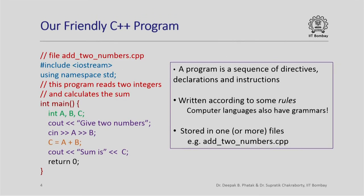Here is our friendly C++ program that we have seen earlier, which sums up two numbers. I have color-coded different parts of this program to highlight the different components we are going to study in this lecture, and I will use the same color-coding scheme throughout. A C++ program, just like a Dumbo program, is a sequence of instructions, and there are a few other things we will call directives and declarations, which we will explore today.